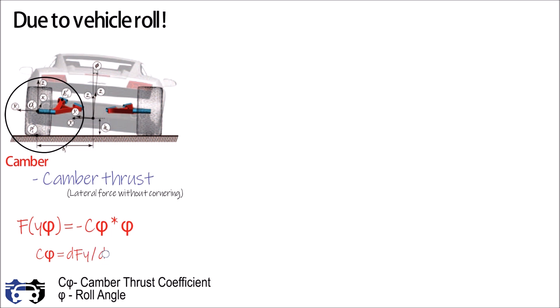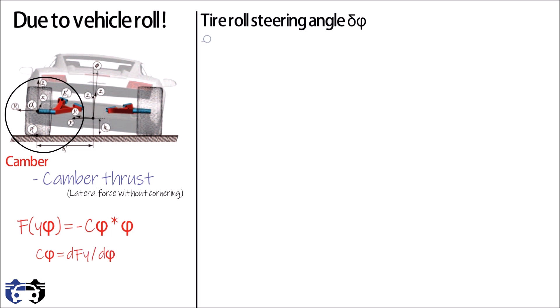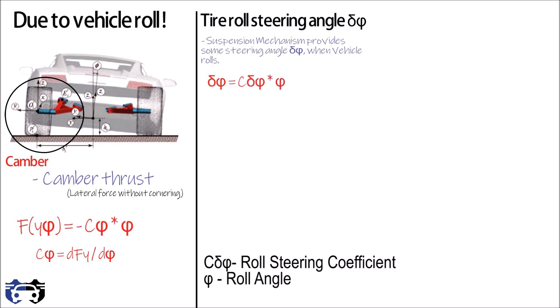When vehicle rolls, suspension mechanism provides some steering angle delta_phi, and delta_phi equals C_delta_phi multiply by phi, where C_delta_phi is the roll steering coefficient given by the slope of steer angle delta at time of roll and the roll angle. So from here we get the actual steering angle delta_A equals delta plus delta_phi.